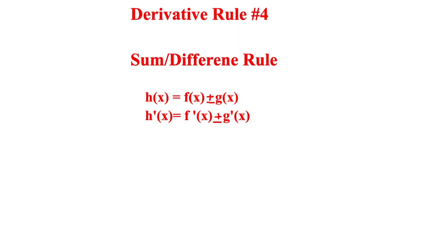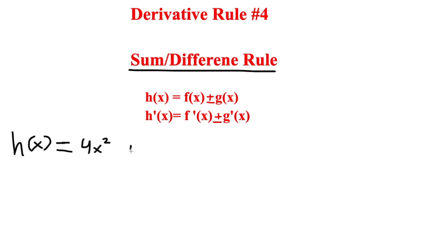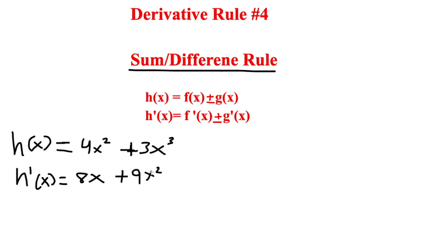Moving on to the fourth rule: the sum and difference rule. We have h of x equal to f of x plus or minus g of x, which gives us h prime of x equals f prime of x plus or minus g prime of x. For example, if we have 4x squared plus 3x cubed, we take the derivative and apply the power rule separately to each term. This gives us 8x plus 9x squared. That is the sum and difference rule.